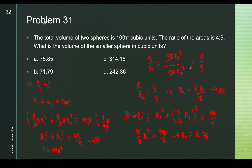So r₁ is the radius of the smaller sphere. Therefore the volume is 4/3 π r₁³ = 4/3 π (2.58)³, and this gives us 71.8 cubic units. So 71.8 cubic units is the answer.